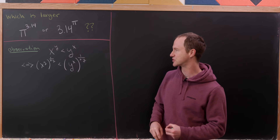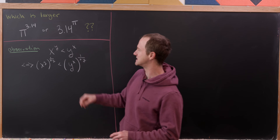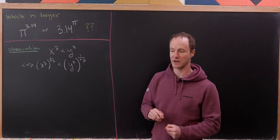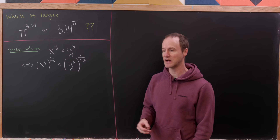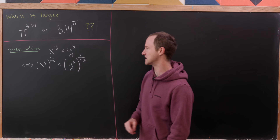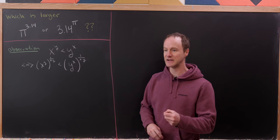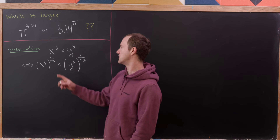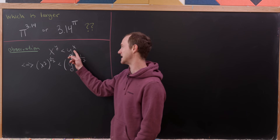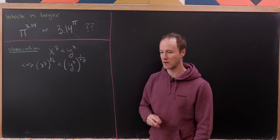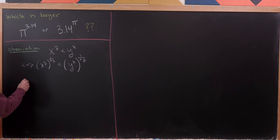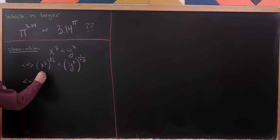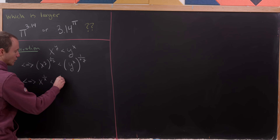You might ask how we know that's valid. Notice that in this setting, x and y both have to be positive real numbers, because non-positive bases can take us outside the real numbers into the complex numbers, where this kind of ordering doesn't make sense. Since exponentiation with a positive real number is an increasing function, raising both sides to the same positive real exponent preserves the inequality. This simplifies to x to the power 1 over x being less than y to the power 1 over y.